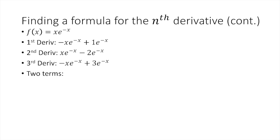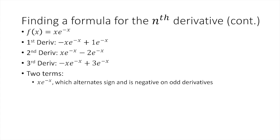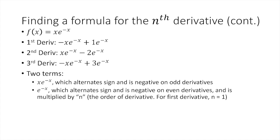I noticed that there are two terms. The x times e to the negative x alternates sign every time. For my first derivative it's negative, for my second derivative it's positive, for my third derivative it's negative. So it's negative on odd derivatives. My second term is e to the negative x. This also alternates sign, but it's negative on the even derivatives, like the second derivative. And it's also always multiplied by n — the number of the derivative I'm on. So for my second derivative, I had x times e to the negative x minus 2 times e to the negative x, and 2 is the number of derivative I'm on.